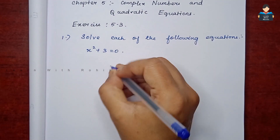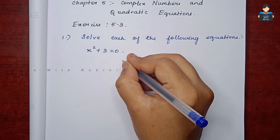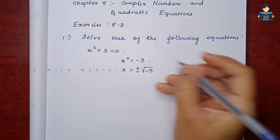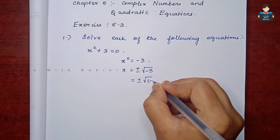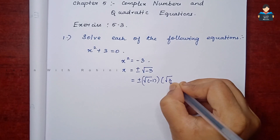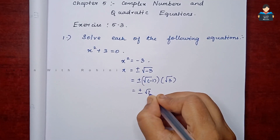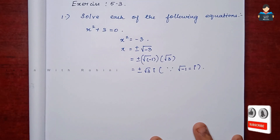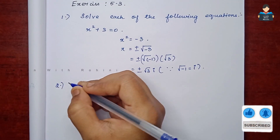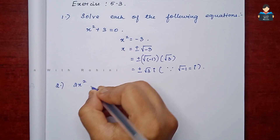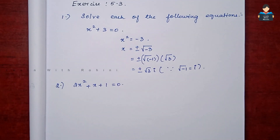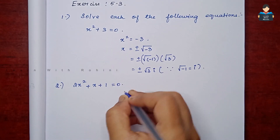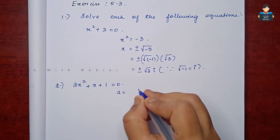So x² = -3, therefore x = ±√(-3), which is ±√(-1) × √3. Since √(-1) = i, the solution is x = ±√3 · i.